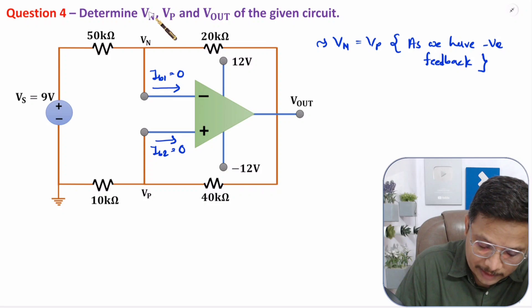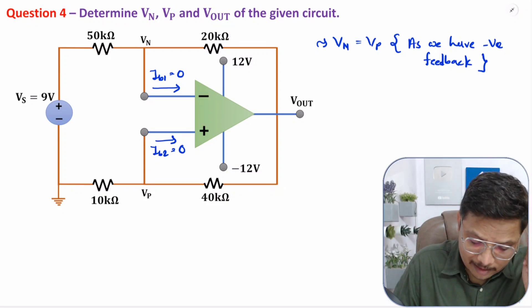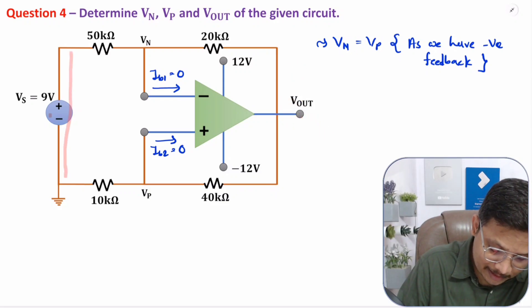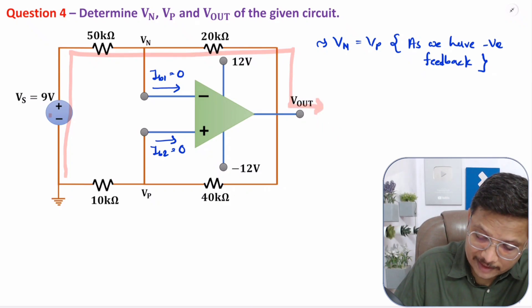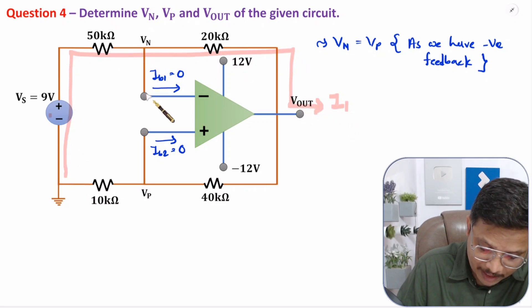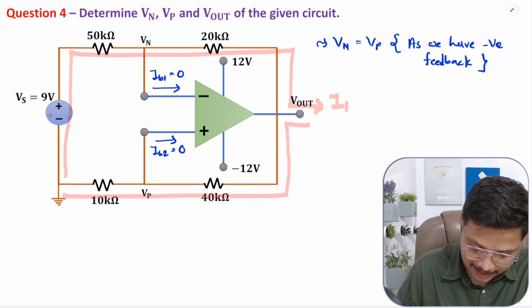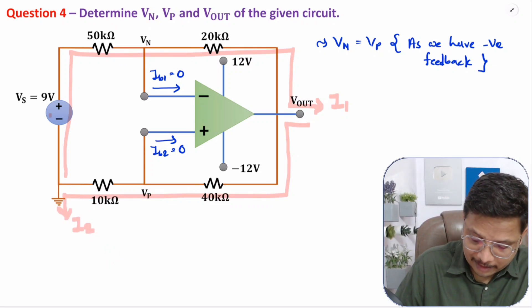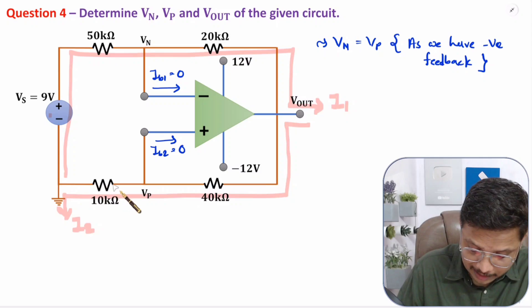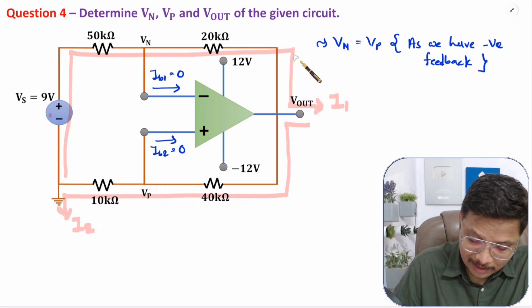Now, to determine voltages Vn, Vp, and Vout, we need to understand how current flows in this circuit. Because of the source, current I1 will be flowing towards the output side. In this loop, current will be I1 since the branch current at the input terminal is zero. From the output, with ground present, current I2 will be flowing through 40 kilo ohm and 10 kilo ohm, since the branch current at that terminal is also zero.